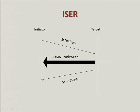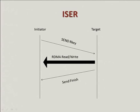A little bit about how iSER works. I have the initiator and the target. Whenever the initiator wants to read or write data to or from the target, it sends an R key. The target is the one that uses RDMA read and RDMA write to the initiator. If I'm the initiator and want to write data to the target, I send the R key, and then the target uses RDMA read to read the data to its memory without initiator involvement. If I want to read data from the target, I send the R key and the target uses RDMA write to write data to the initiator, then sends a finish notification.